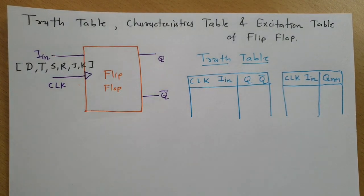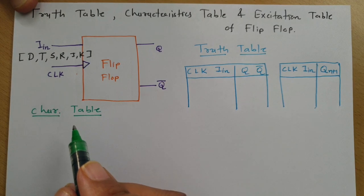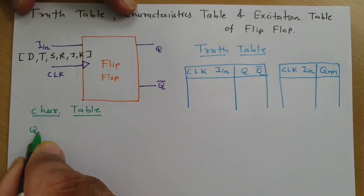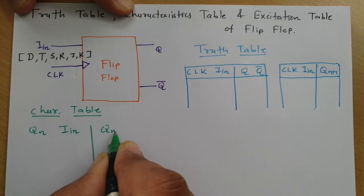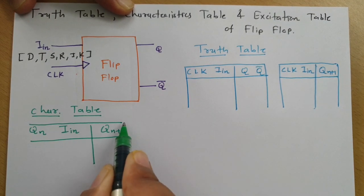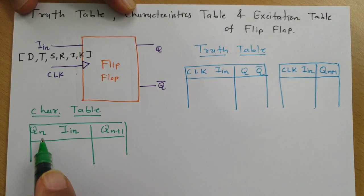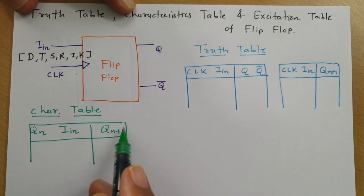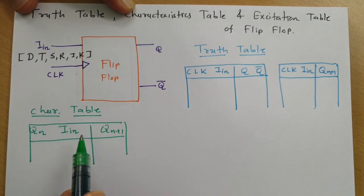Now let us try to understand the second table, which is the characteristic table. The characteristic table is a table between current state and input with respect to next state. So Q(n+1) is the next state at the output, and Q(n) is the current state. With respect to the input, this current state will change and there will be a next state.